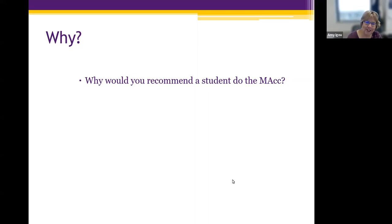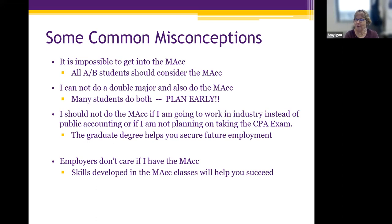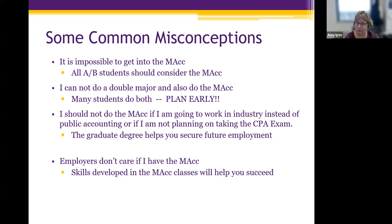Let's dispel some rumors about the MAC. First: it's impossible to get in. Obviously not — we have students in the MAC. All A and B students should definitely consider applying; you'll be great candidates. If you're borderline, come talk to me and we'll figure out a plan. Second: you can't do a double major. Yes, you can — I have students who've done it. We may need to do some creative scheduling, but if you plan early and come talk to me, we'll see what we can do. If you ask at the end of your fourth year, it's trickier, so plan early.